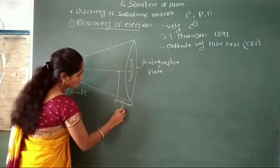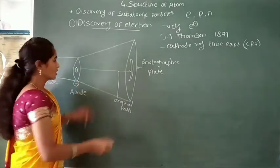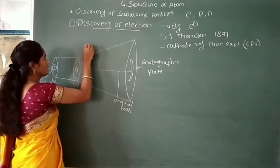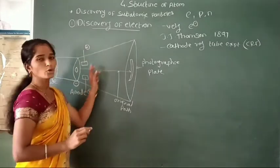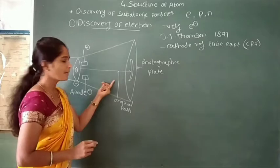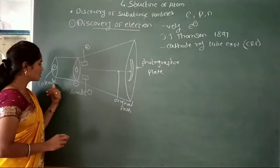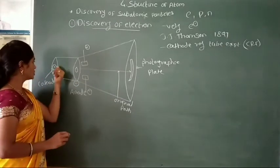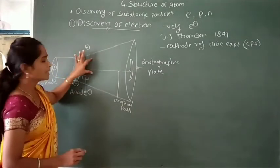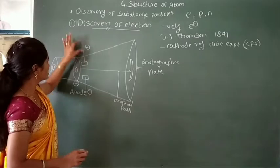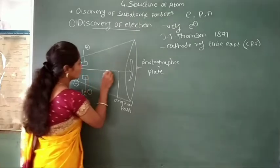On this experiment, magnets are attached — one positive and one negative. In this experimental arrangement, two electrodes are present: one positive called cathode and one negative called anode. Two magnets are also attached — a positive magnet and a negative magnet. This is the original path of this cathode ray according to J.J. Thomson, which is a stream of tiny particles.